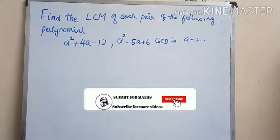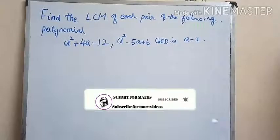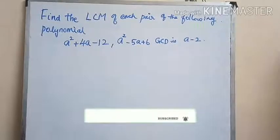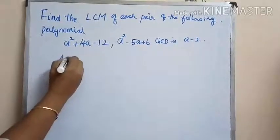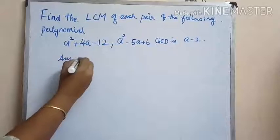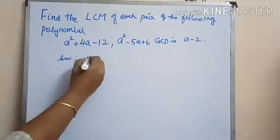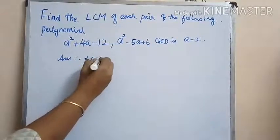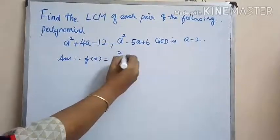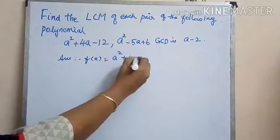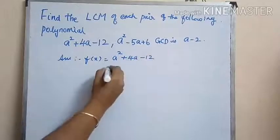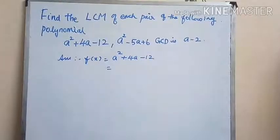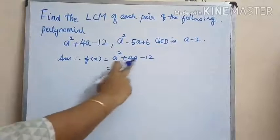The polynomials are given to be a squared plus 4a minus 12 and a squared minus 5a plus 6, whose GCD is a minus 2. Let us consider f(x) as a squared plus 4a minus 12.